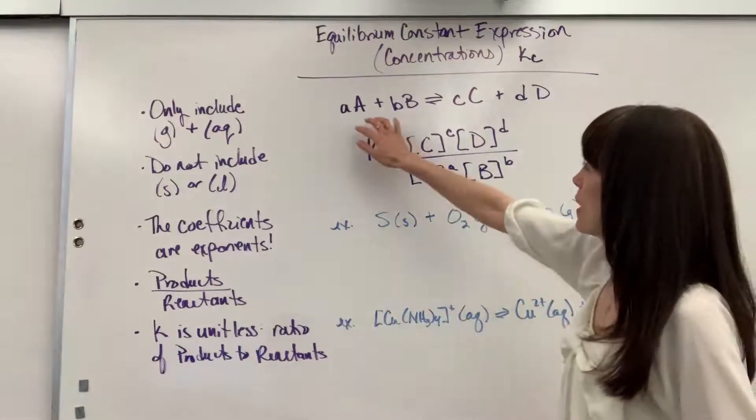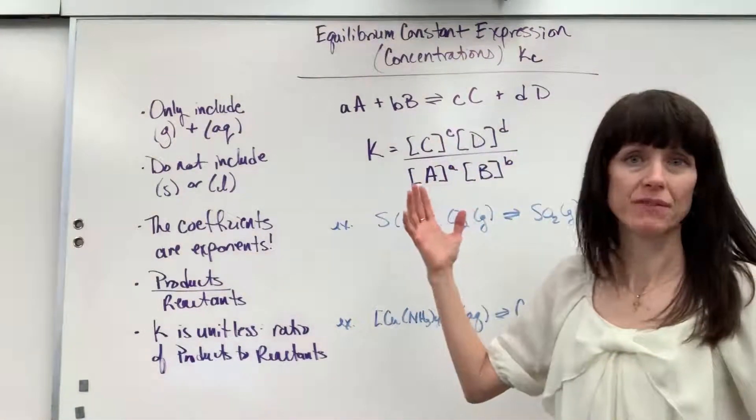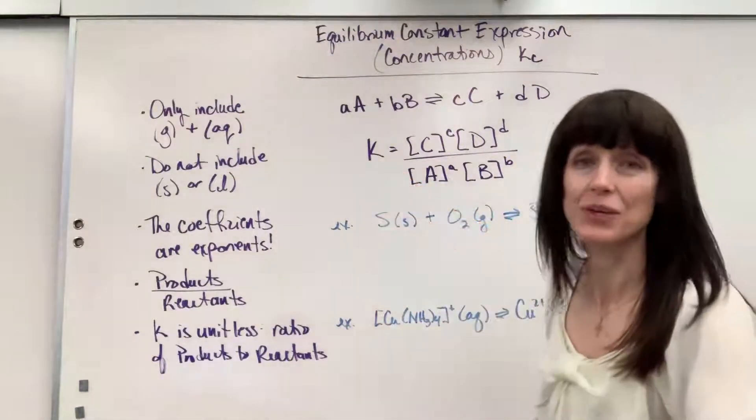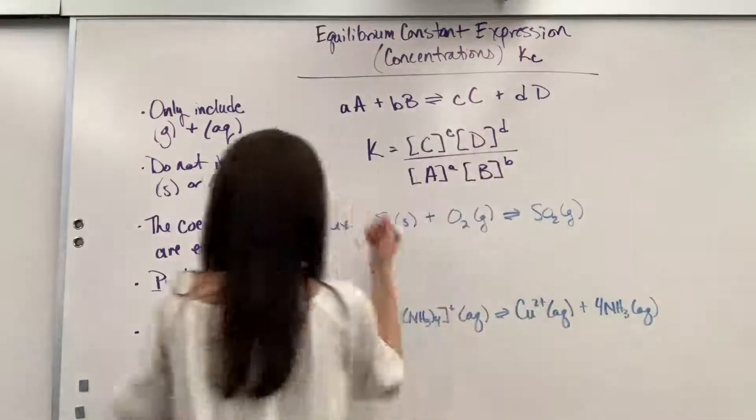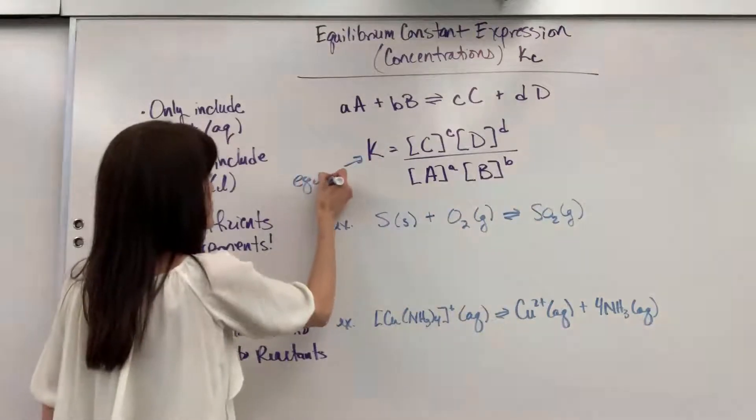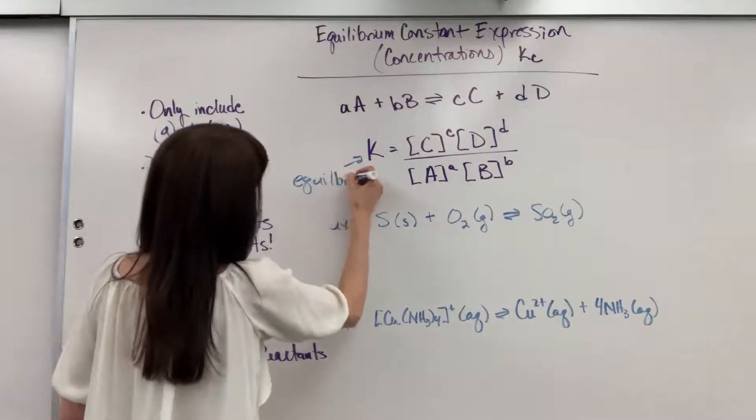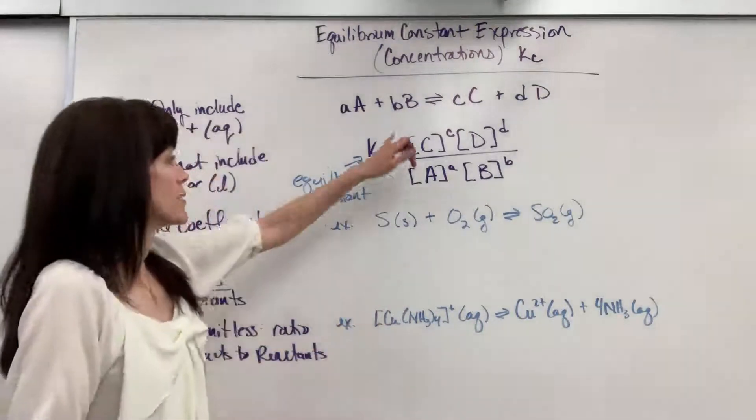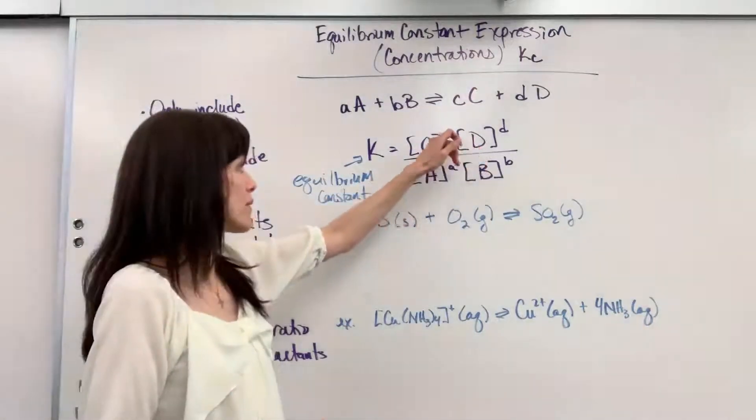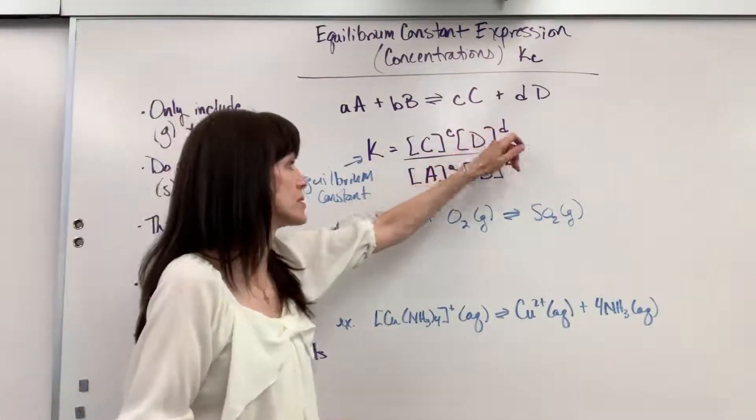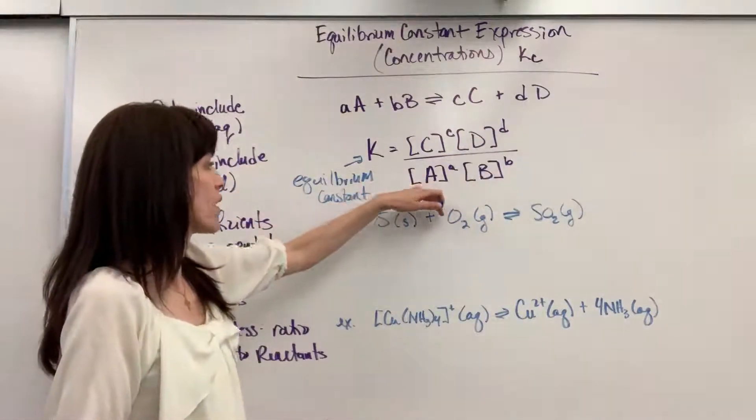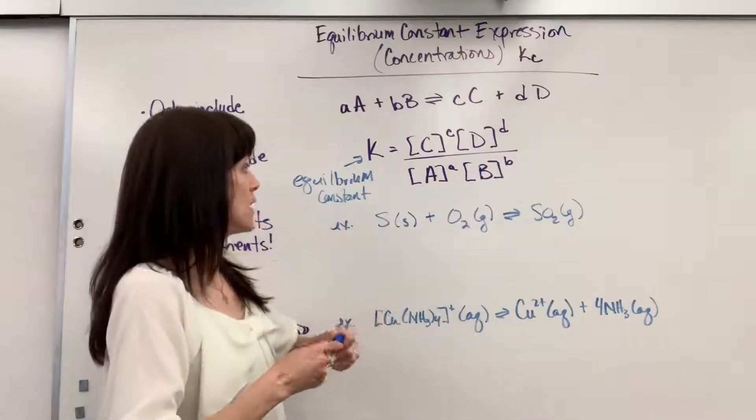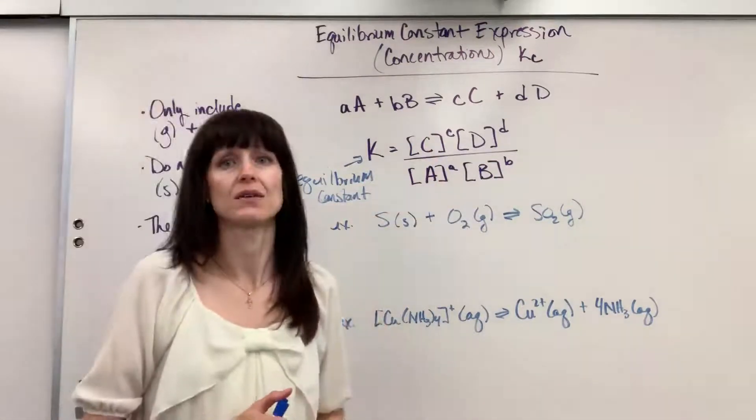So here is my generic equation. They're going to give us concentrations, and here we have it. K, this is our equilibrium constant. Let's write that down. So this is the equilibrium constant. It always equals the concentration of products multiplied, raised to the coefficients of each product, divided by the concentrations of reactants multiplied, each raised to the coefficient of that particular reactant.